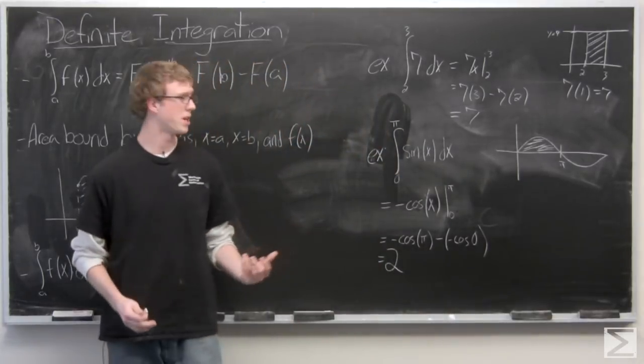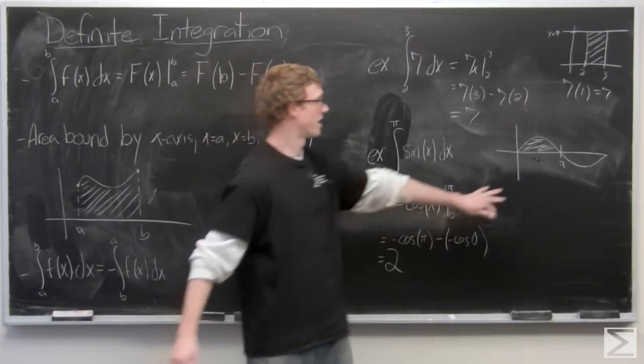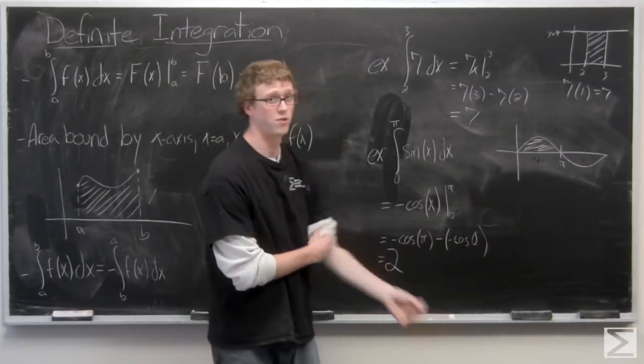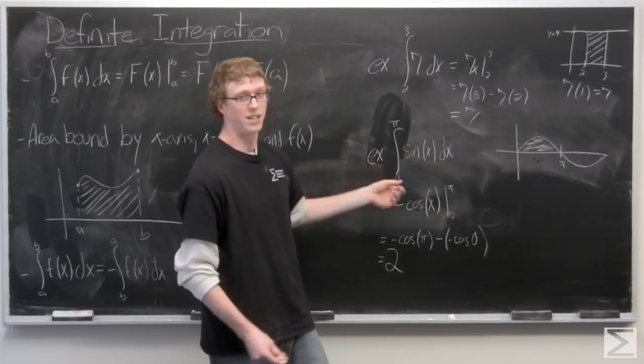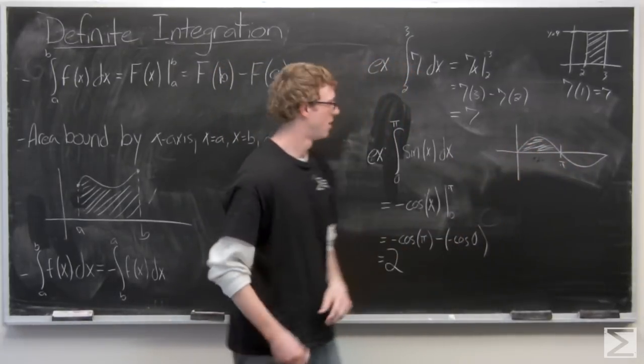So you're kind of getting the picture. This area right here is 2. This is negative 2. And those two functions together, excuse me, not those two functions together. If we had the integral of sine of x from 0 to 2 pi would be just 2 minus 2, which would be 0.